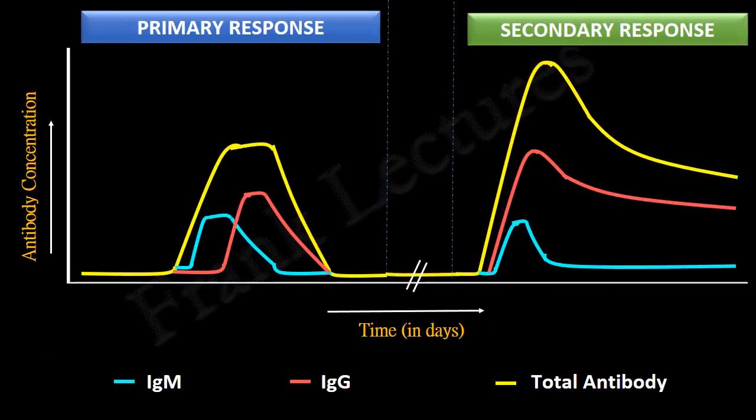In summary, the primary immune response is slow and short-lived — it has a long lag phase and antibodies are found in the blood plasma for only a short period of time. But the secondary immune response is rapid, strong, and prolonged — it has a short lag phase and high concentrations of antibodies persist for a longer period in the blood plasma of the individual.